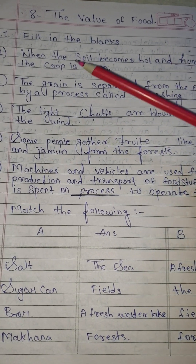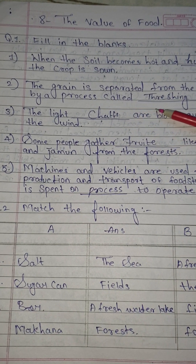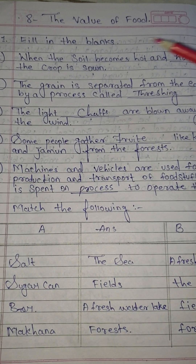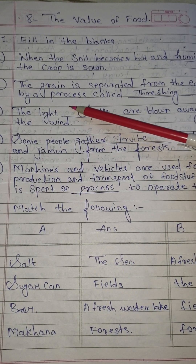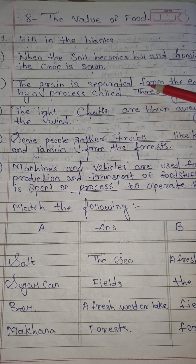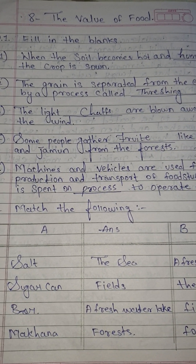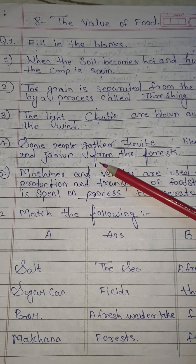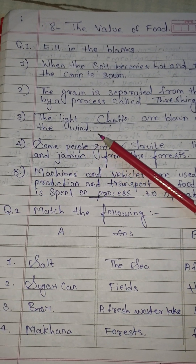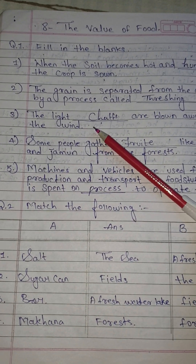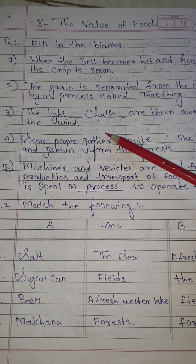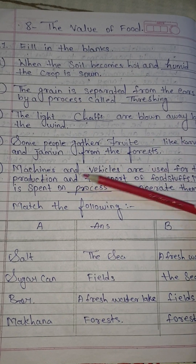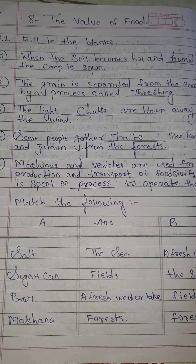Answer: humid. Number 2: the grain is separated from the ears by a process called threshing. Number 3: the light dash are blown away by the wind. Answer: chaffs.